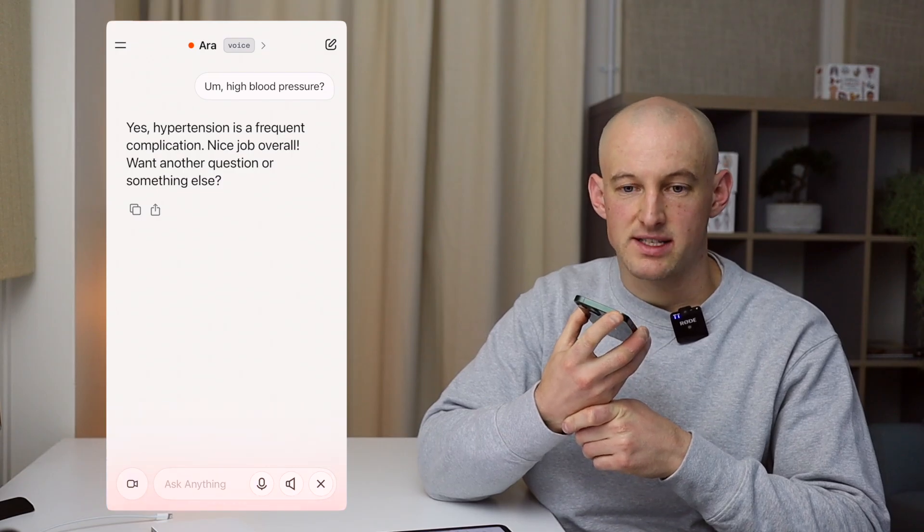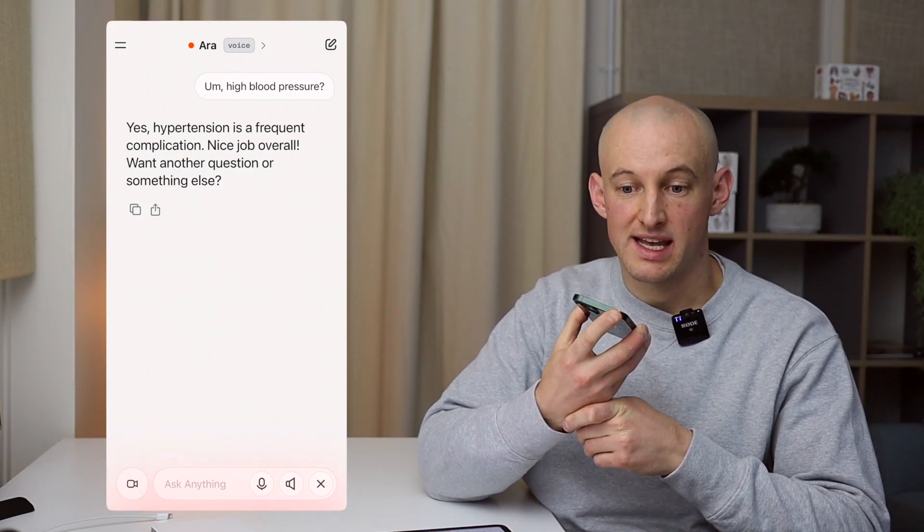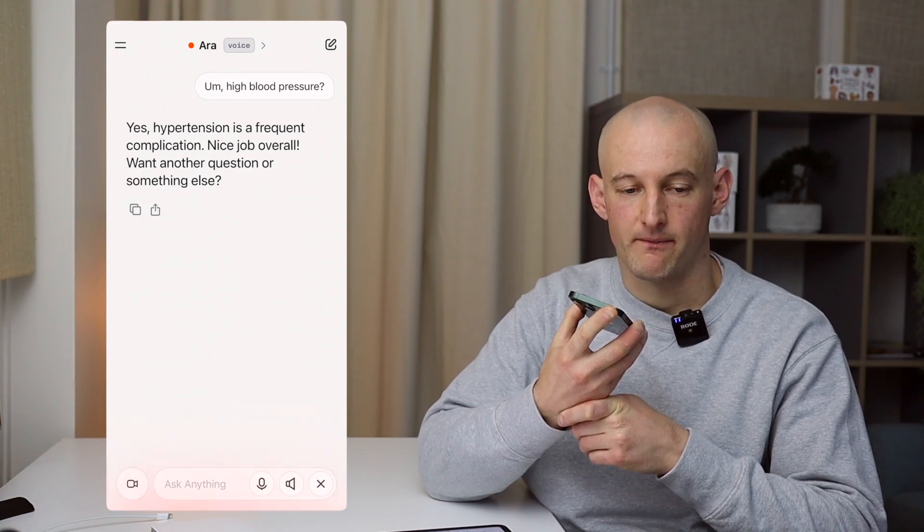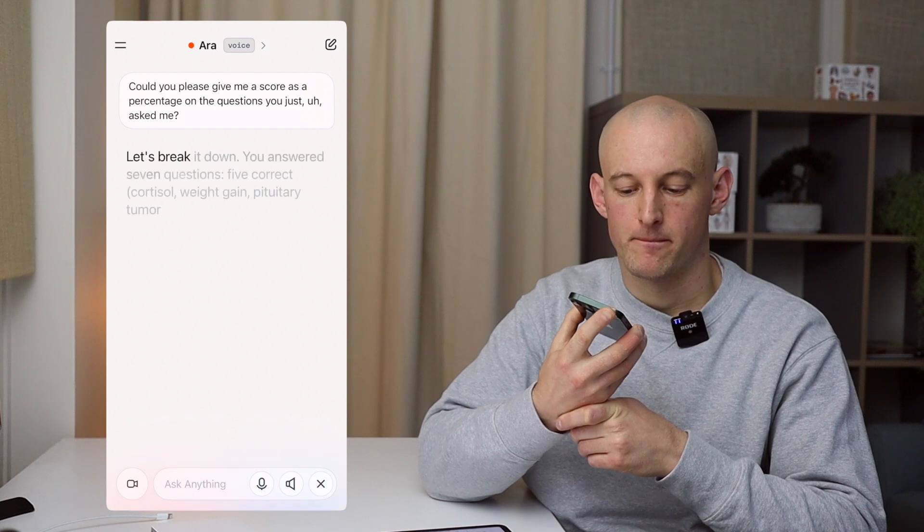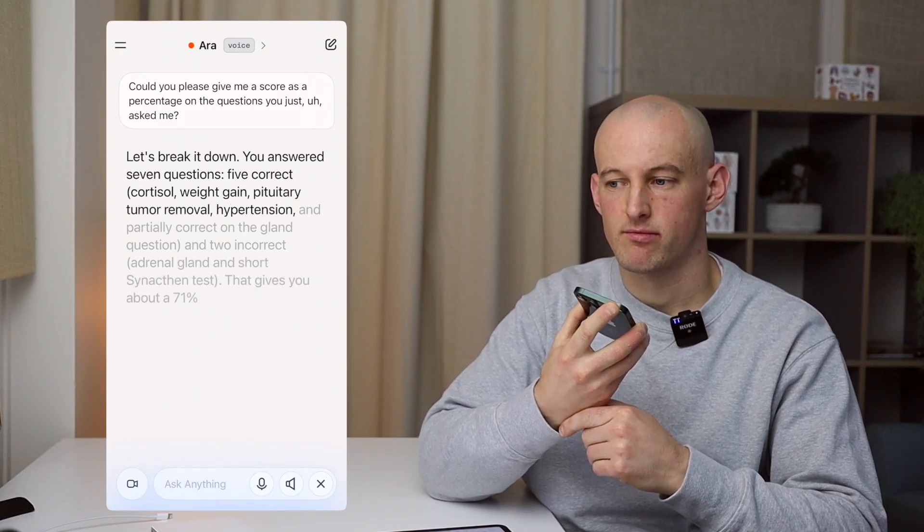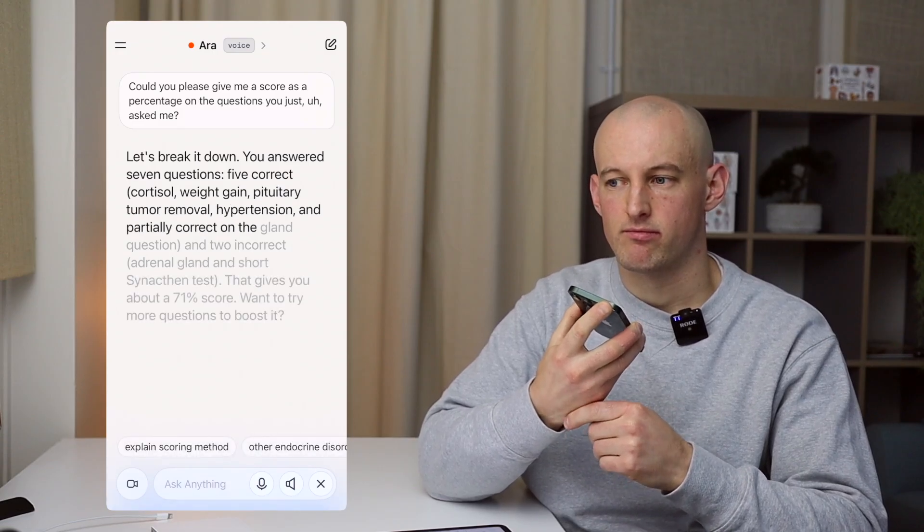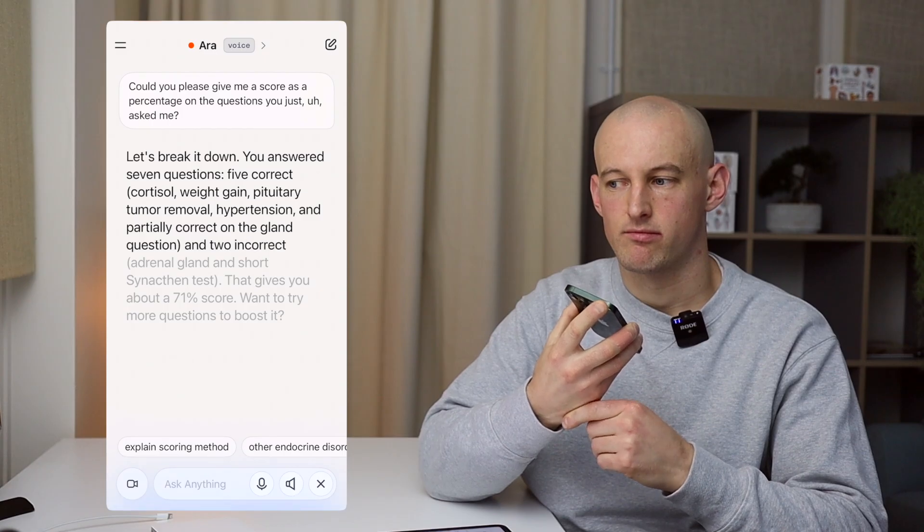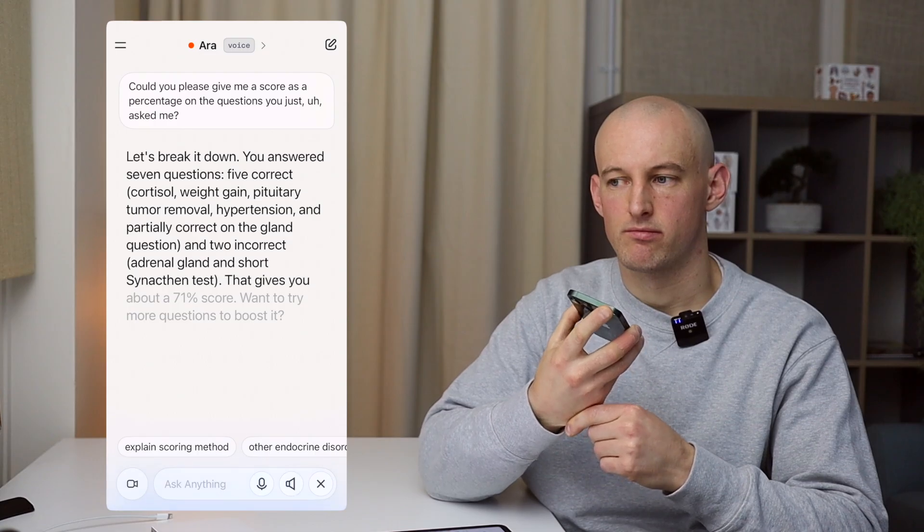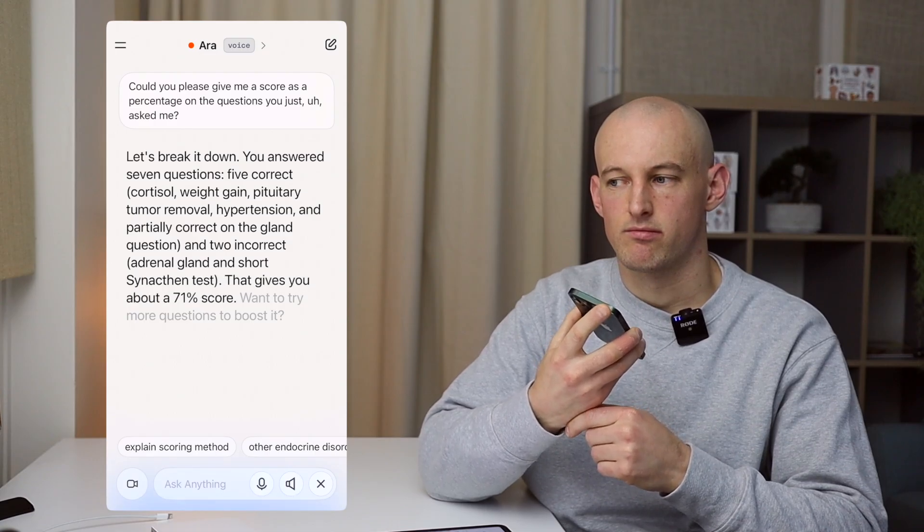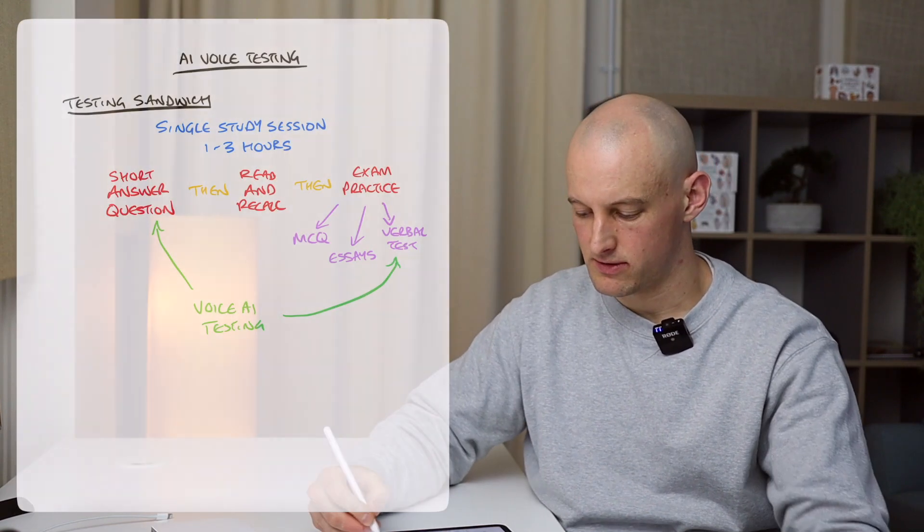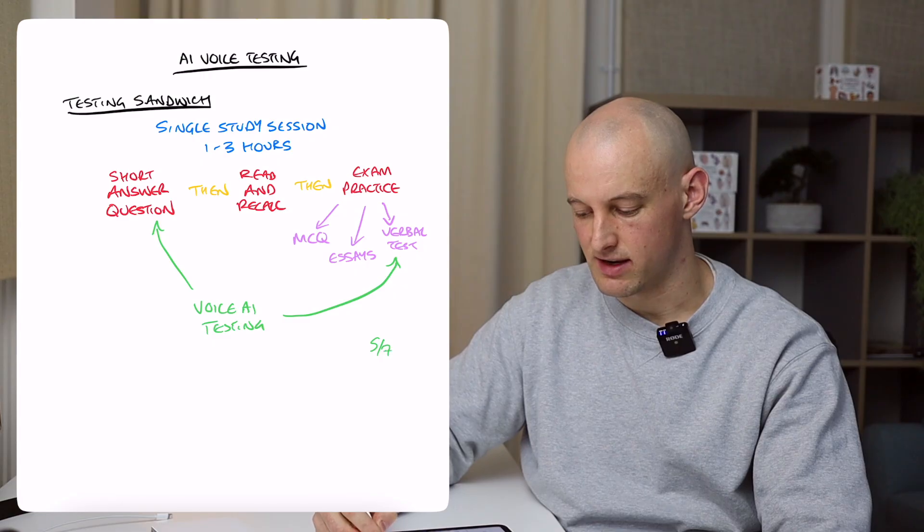Could you please give me a score as a percentage on the questions you just asked me? Let's break it down. You answered seven questions. Five correct. Cortisol, weight gain, pituitary tumour removal, hypertension, and partially correct on the gland question. And two incorrect. Adrenal gland and short synactin test. That gives you about a 71% score.